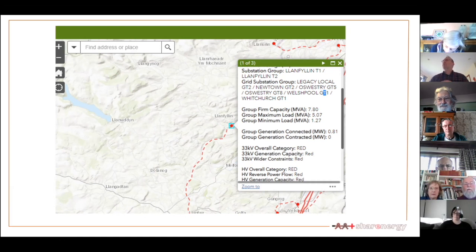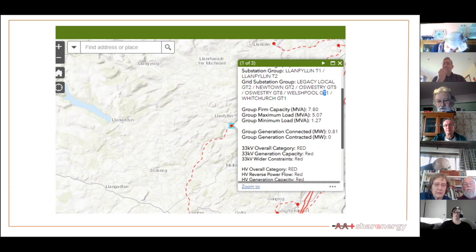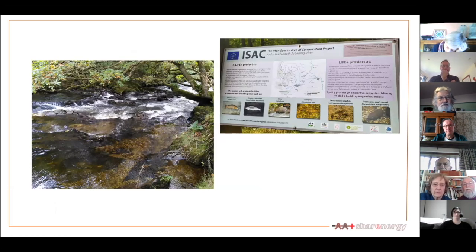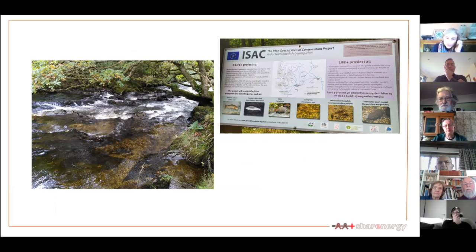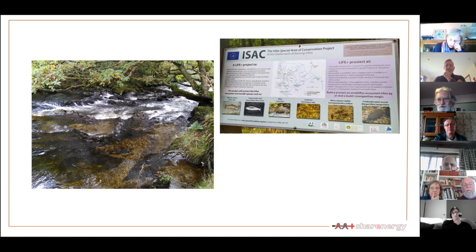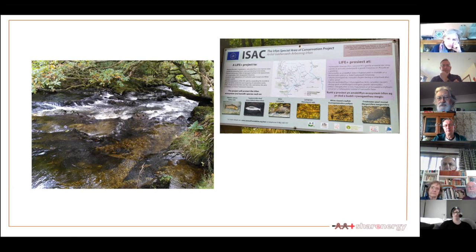Moving on to the presentation — we looked at hydro, which was particularly raised by the group in Llanwrtyd Wells. There's a nice river with good flow but two issues: there isn't really much of a drop — about one percent — there are no weirs, and it's also within the River Irfon Special Area of Conservation. For a hydro scheme you really need two things: flow and drop.